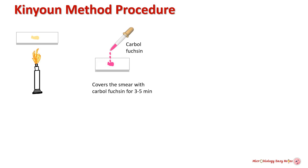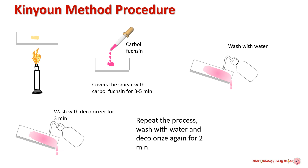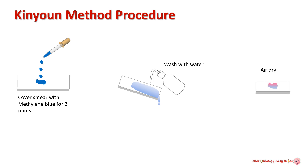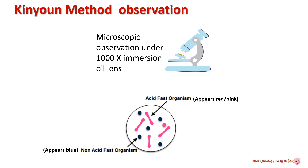Kinyoun method procedure: prepare and heat fix the smear prior to staining. Cover the smear with carbol fuchsin for three to five minutes at room temperature. Gently rinse the slide with water, then run 1% sulfuric acid decolorizer over the slide for approximately three minutes. Rinse with water and decolorize again for one to two minutes until the solution runs clear. Rinse again with water, then cover with methylene blue counter stain for one minute. Gently rinse and blot dry the slide. Examine under microscope with 1000x immersion oil lens — acid fast cells appear red or pink and non-acid fast cells appear blue.